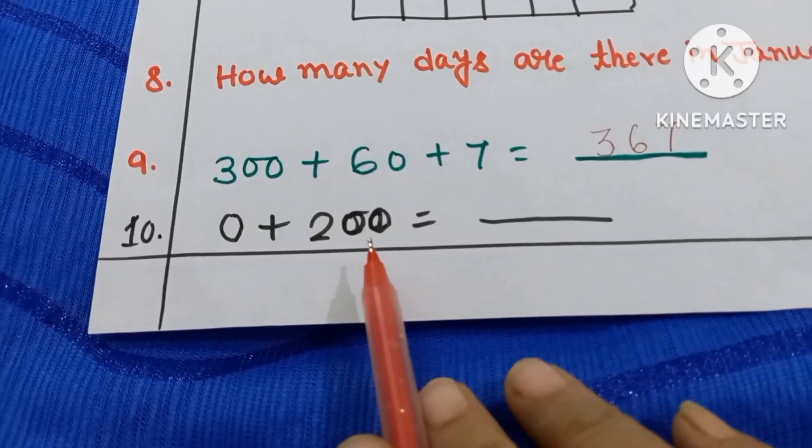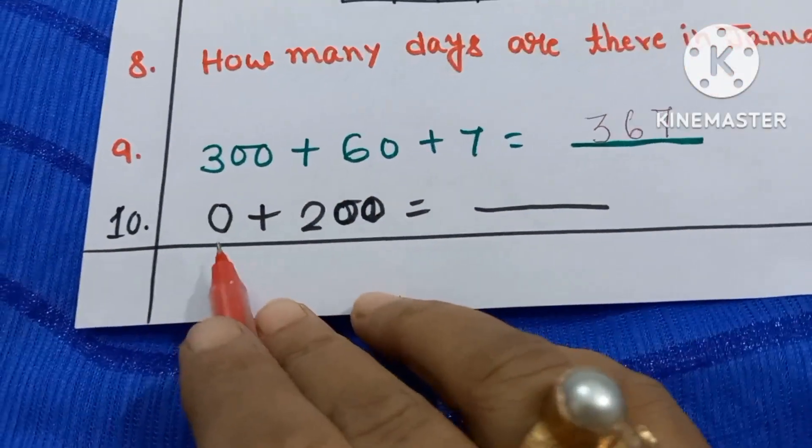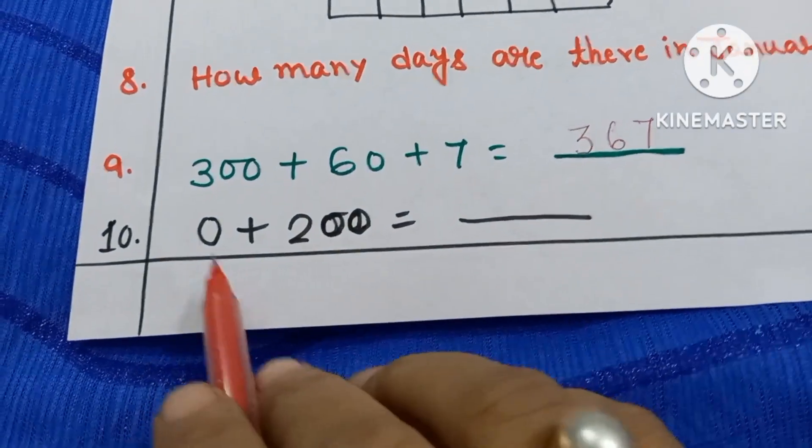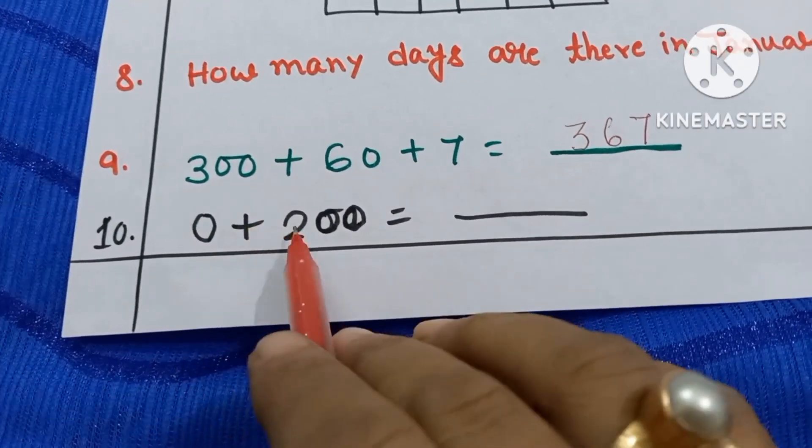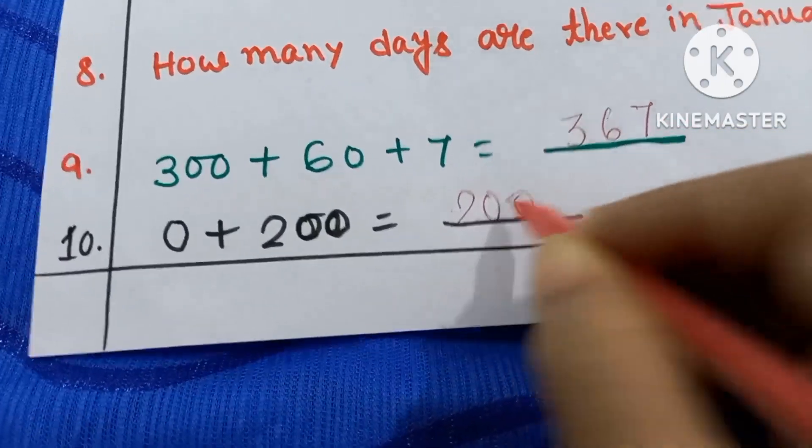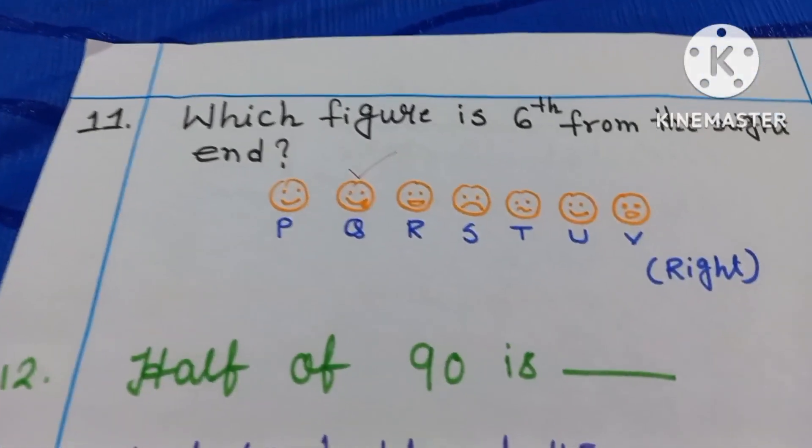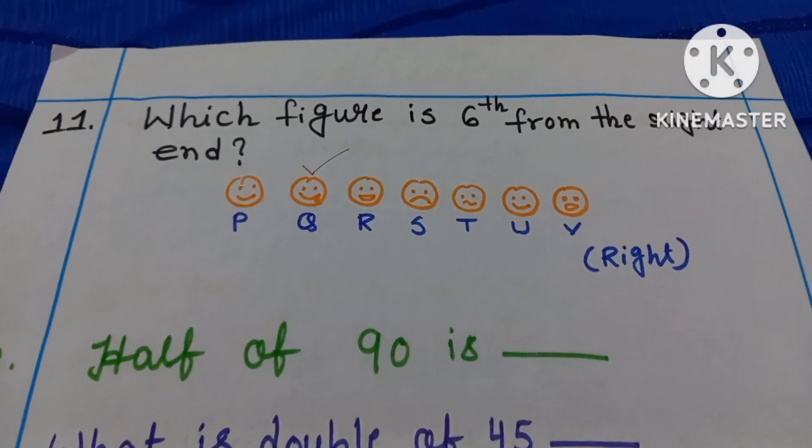Number 10. 0 plus 200. So 0 means here 0 has no value. That means only you have to write 200. Let's move to the next part.